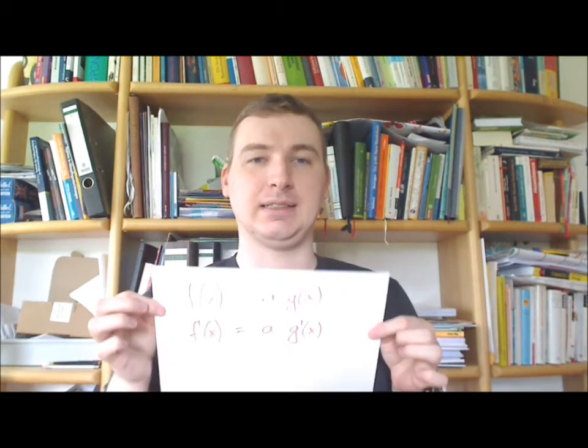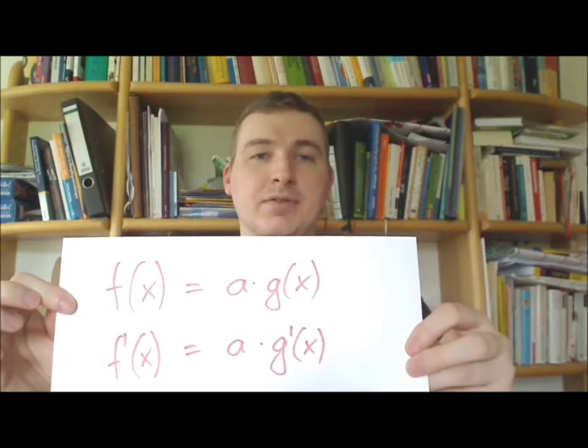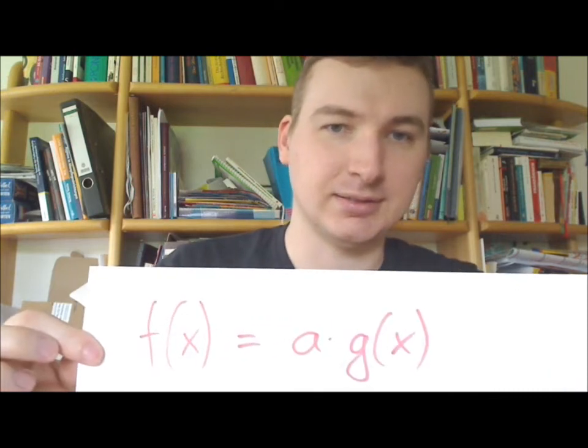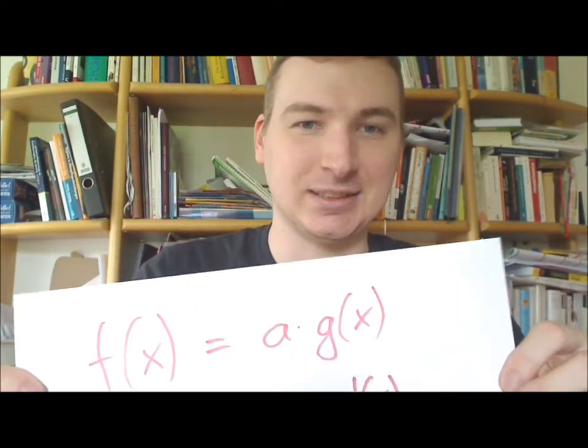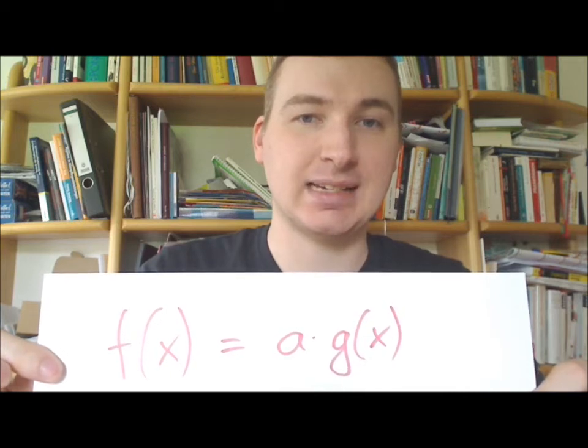You have, as the name may suggest to you, you have a factor. So, in the first line, you have a factor. First line, you have f(x) is a times g(x).